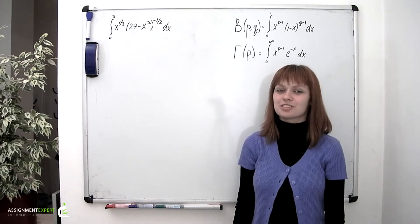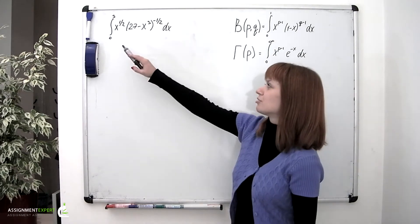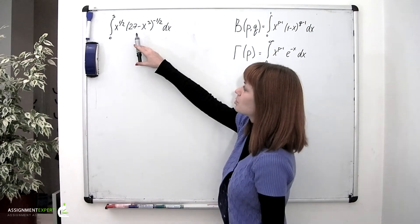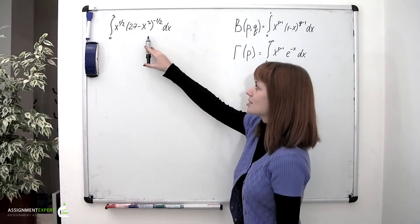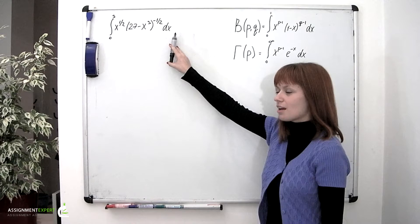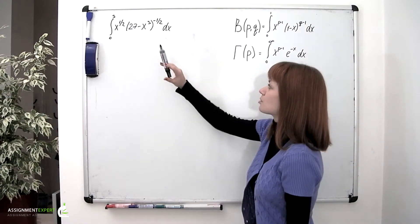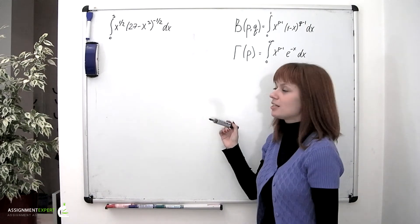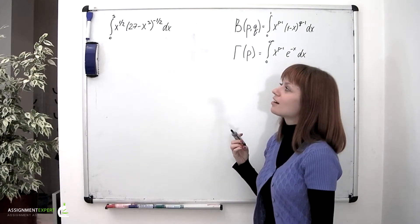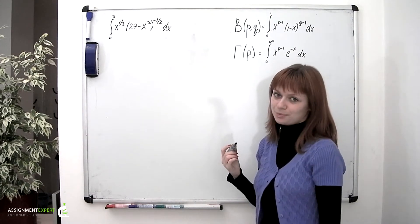We have an integral to evaluate: the integral from 0 to 3 of x to the one-half times (27 minus x cubed) to the negative one-half dx. The expression under the integral isn't a simple thing to integrate, so we can try and apply special functions to see if they can be of any help.